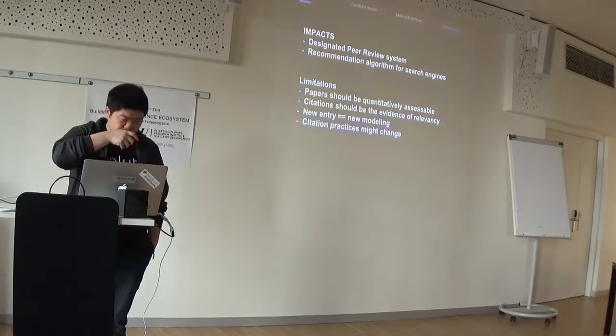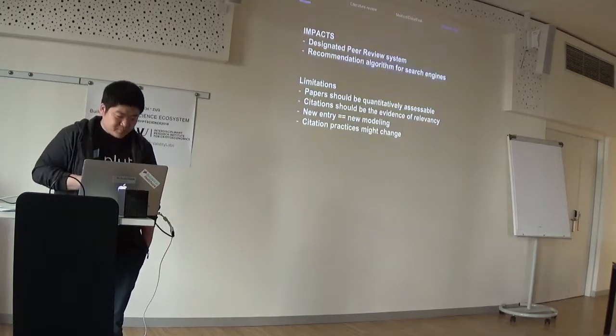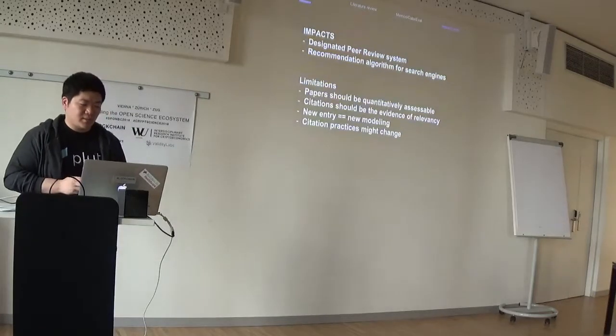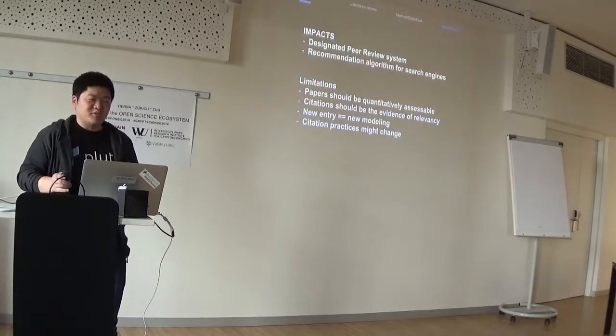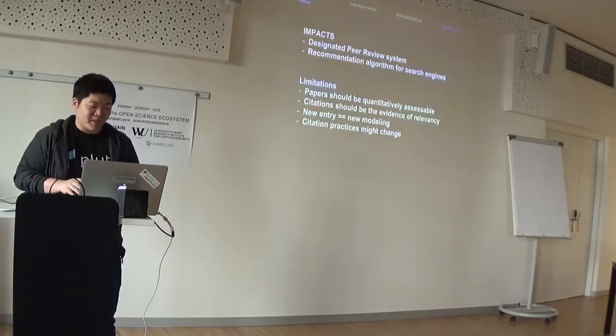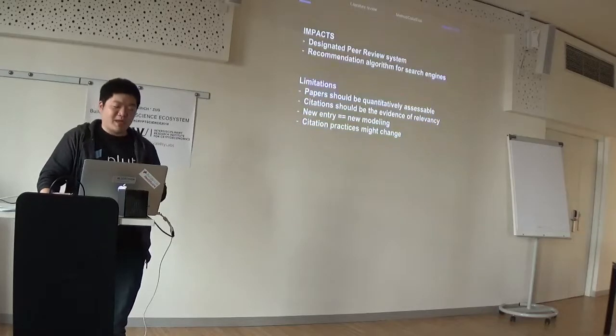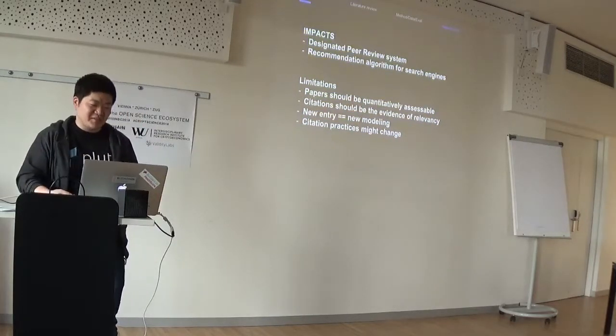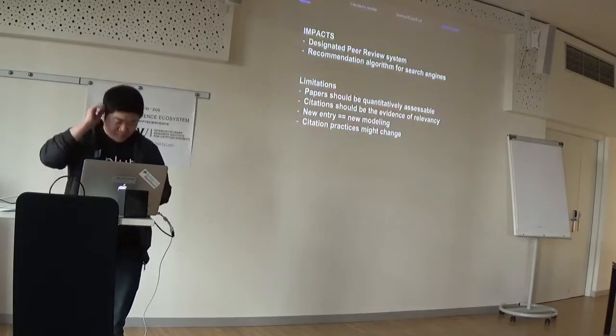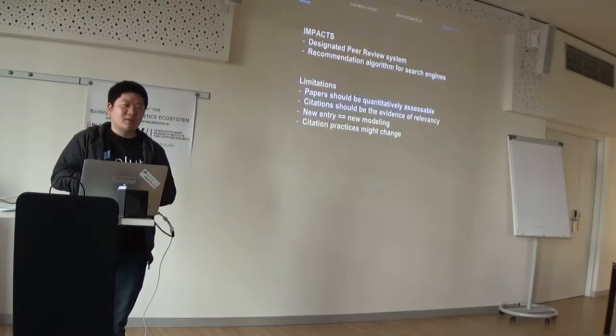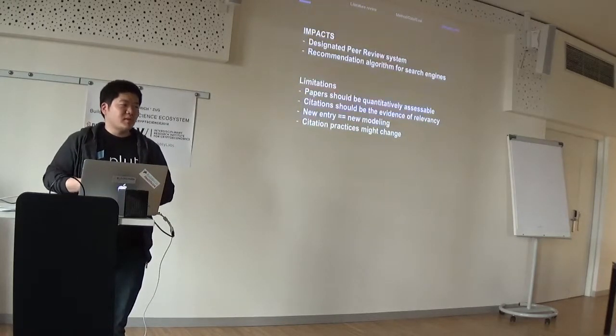For search engines for academic work, it's great to have a recommendation system. The limitation is that we're doing this study under some clear assumptions. Firstly, we're assuming that academic papers are measurable on a quantitative basis—we're just assuming it so we can have quantity scores on papers. Another assumption is that citation is a clear evidence of relevancy between two papers. I don't want to argue on this; there's been a lot of debate, but it's just an assumption for our study.